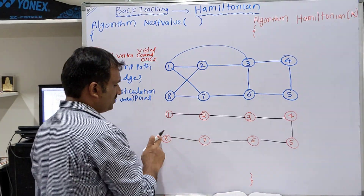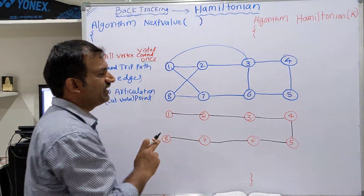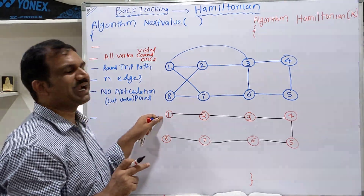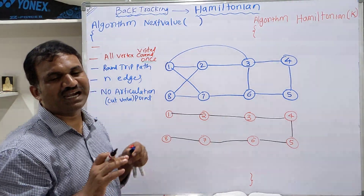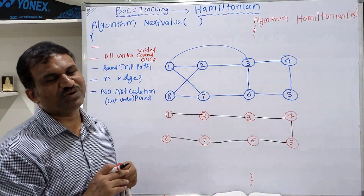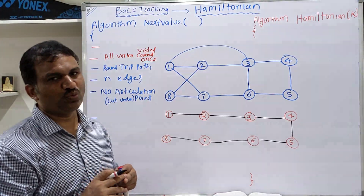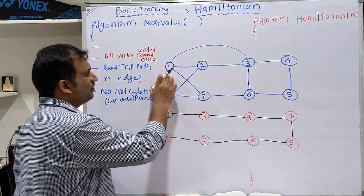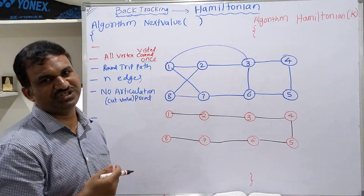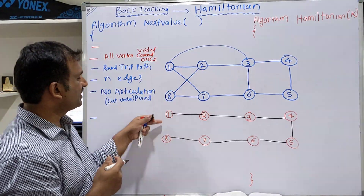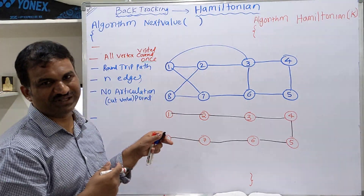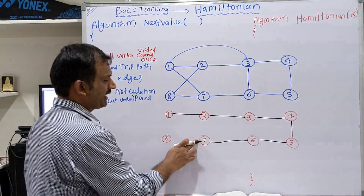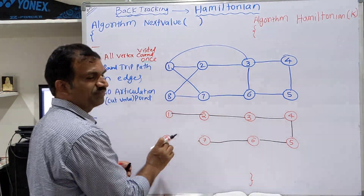The Hamiltonian Cycle completes when it returns to the starting point. All remaining vertices except the starting vertex must be visited only once. From 8 to 1 we don't have an edge, so we cannot complete the Hamiltonian Cycle — we have to backtrack.